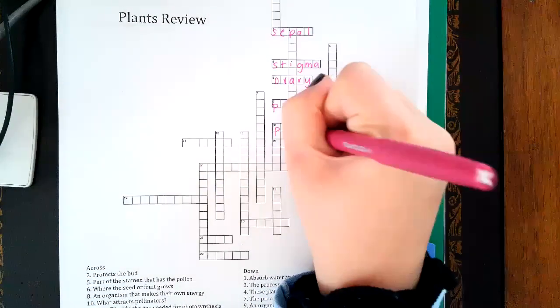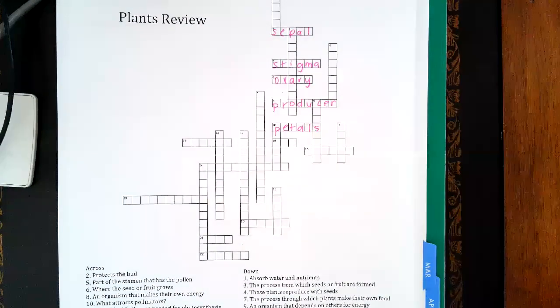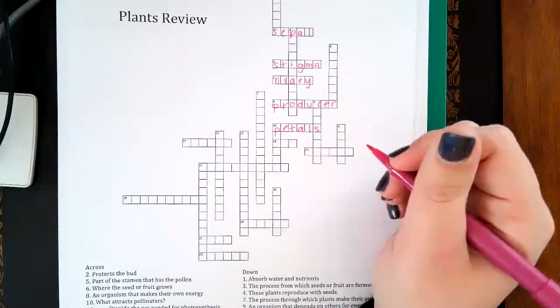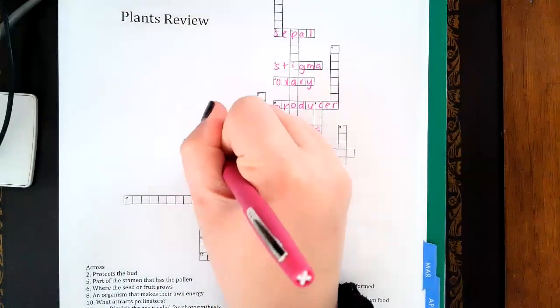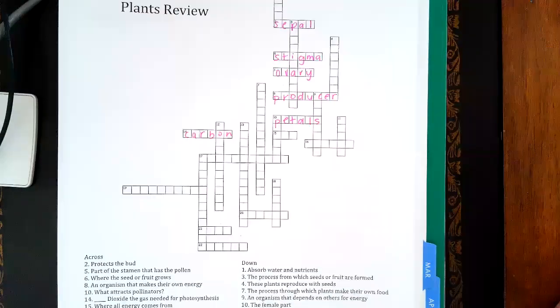Carbon dioxide is what they need for photosynthesis. Where all energy comes from - that's the sun.